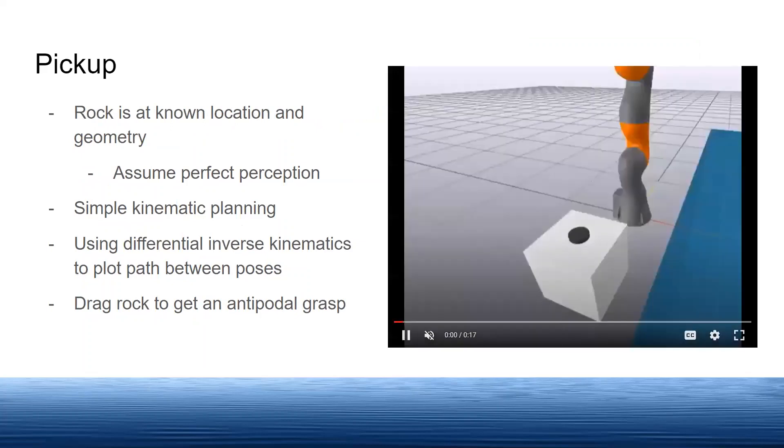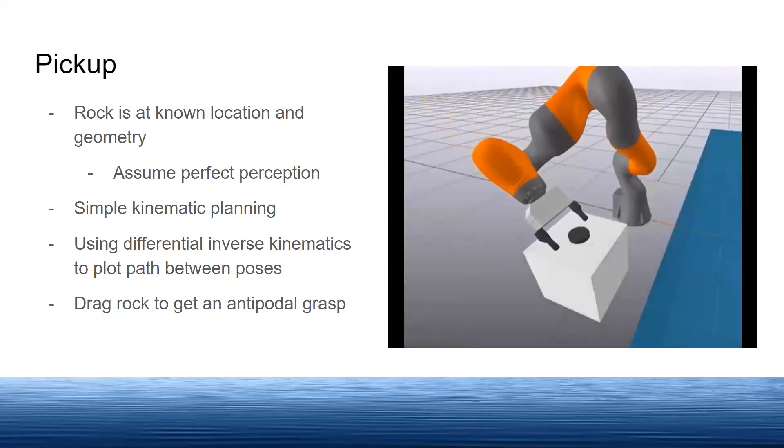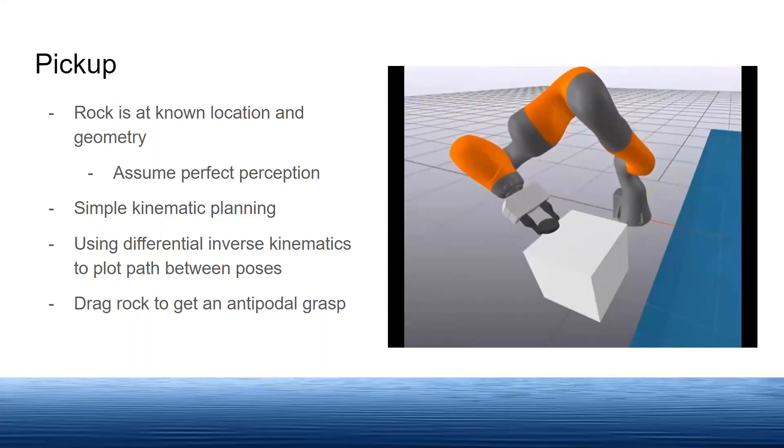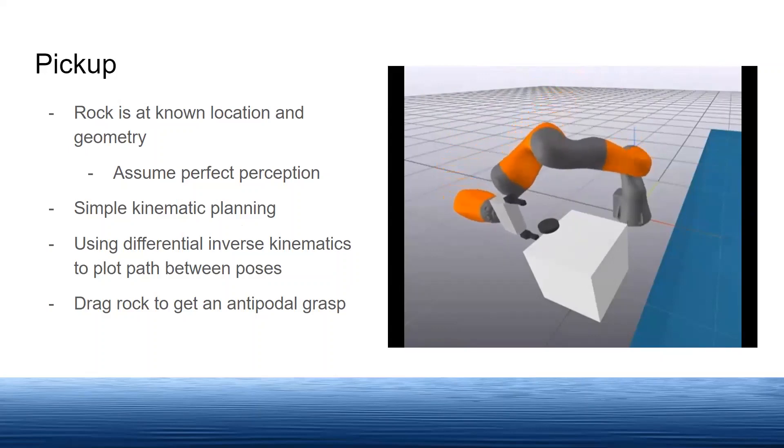For the pick up state, we utilize simple kinematic planning and differential inverse kinematics to drag the rock to the edge of the table. This enables us to get an antipodal grasp on the rock as shown in the video. Once we pick up the rock, we load the rock to an ideal initial throwing position.